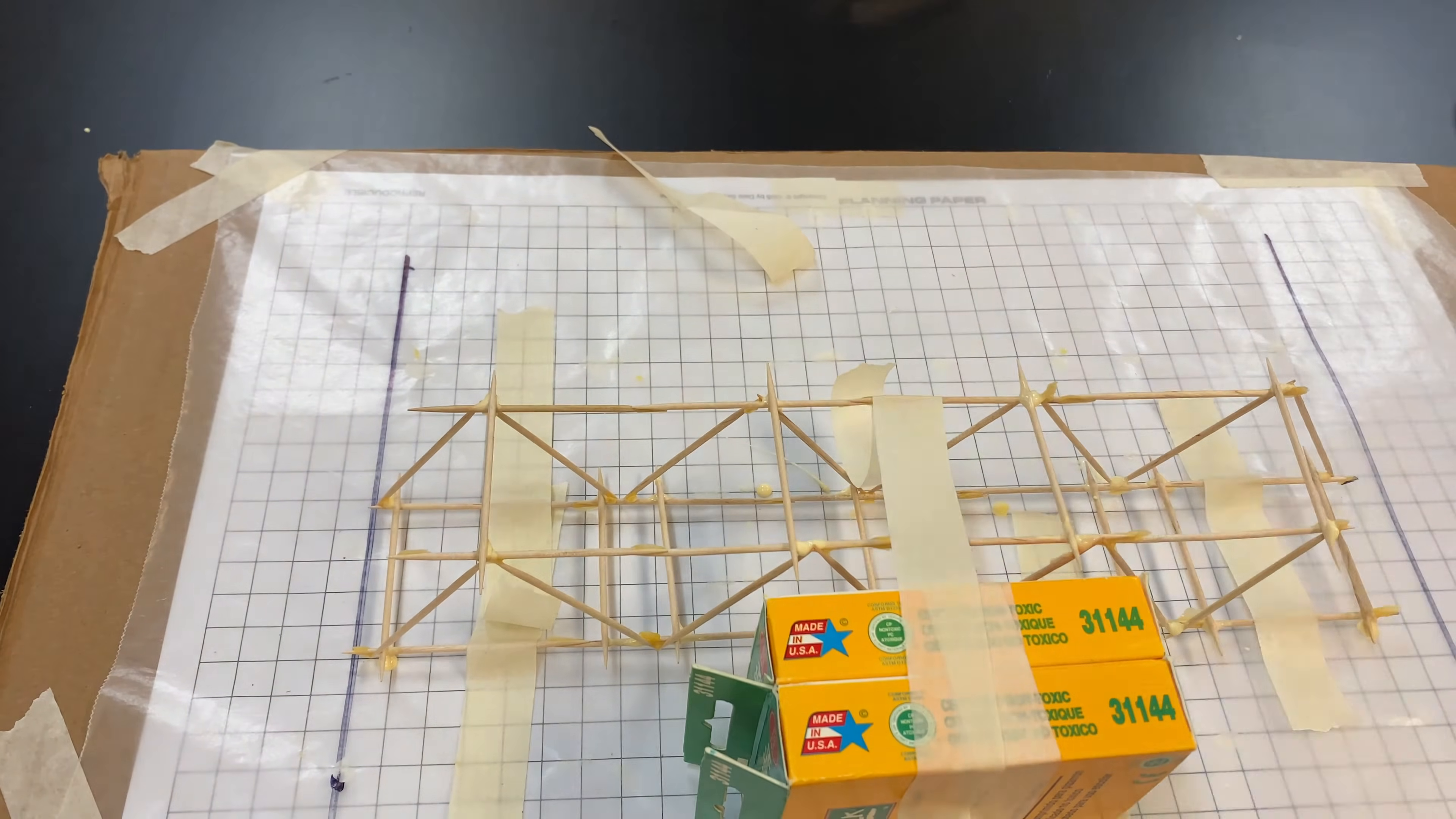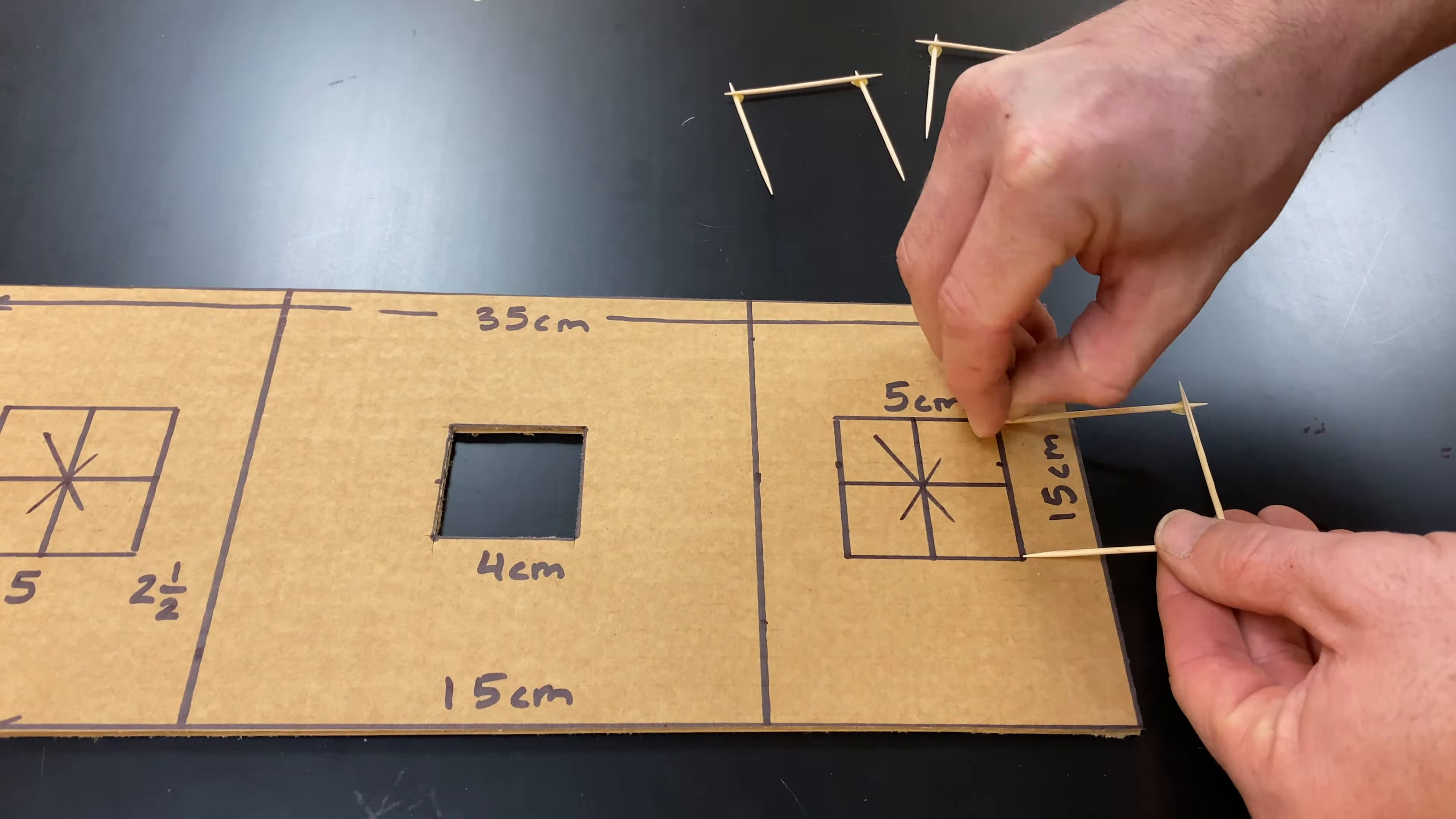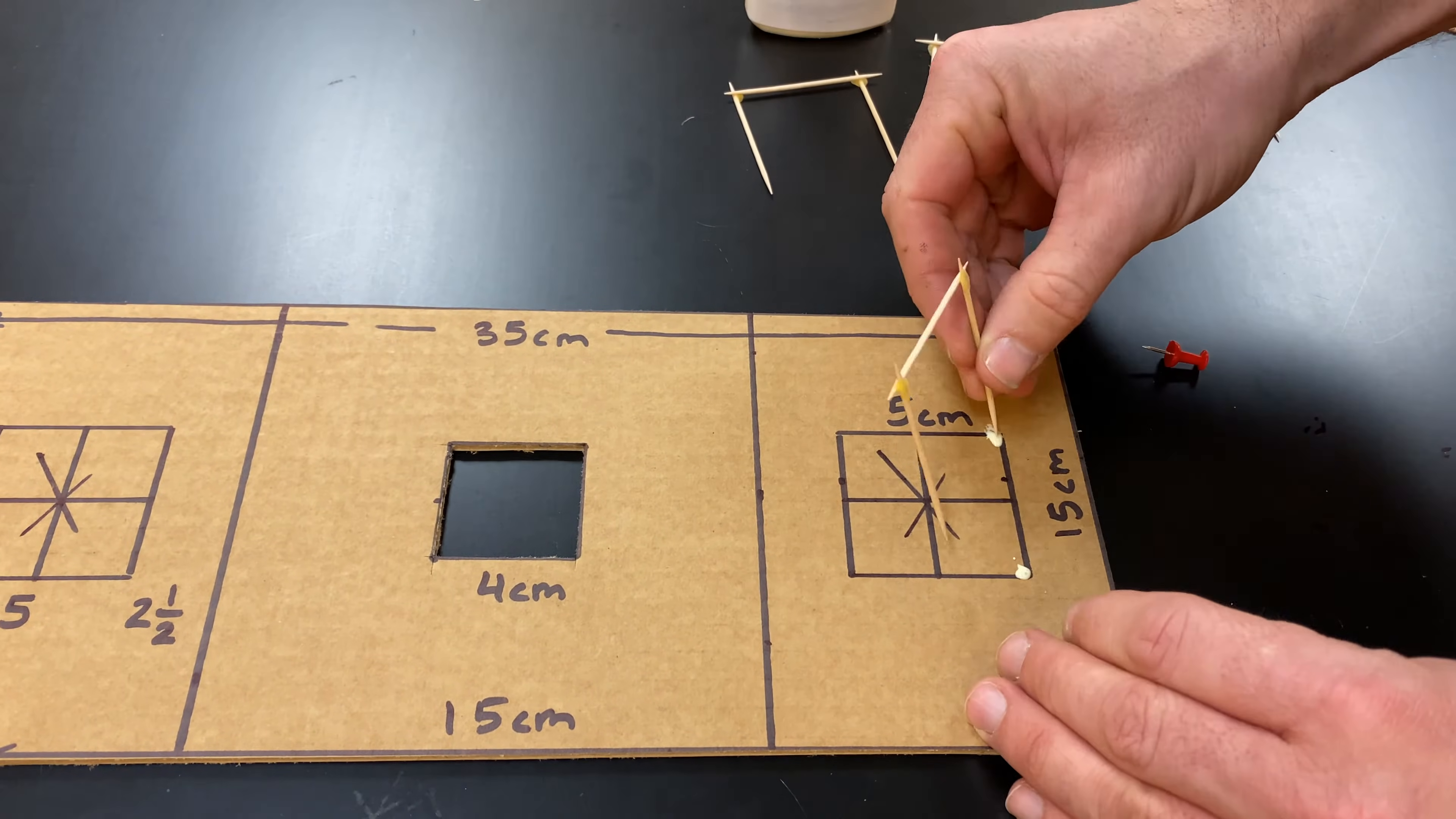While we wait for that to dry, we can glue our bridge supports onto the land. Poke little holes where the toothpicks will be positioned. Add a dab of glue and insert the supports.